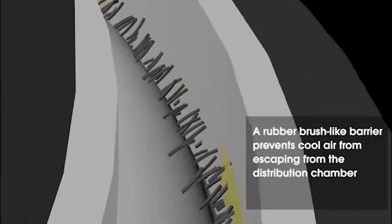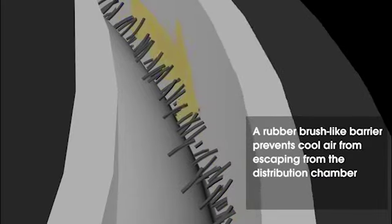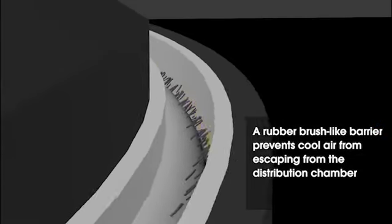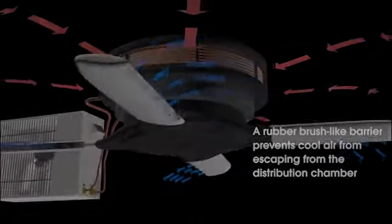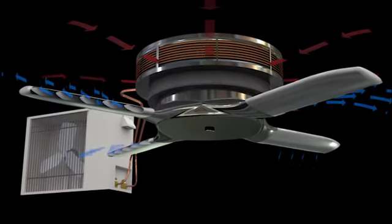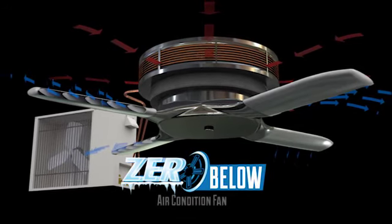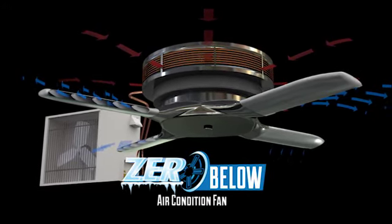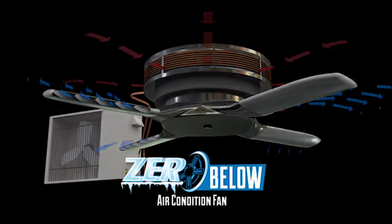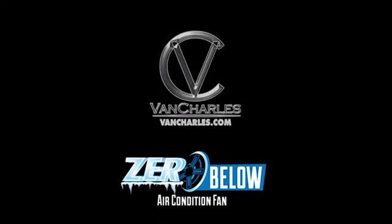A rubber brush-like barrier prevents cool air from escaping from the fan hub, which is used as an air distribution chamber. The Zero Below AC fan is an excellent solution for providing cooling, heating, or ambient air distribution in any space. The Zero Below AC fan, another world-changing innovation from inventor Peter Charles Whittington.